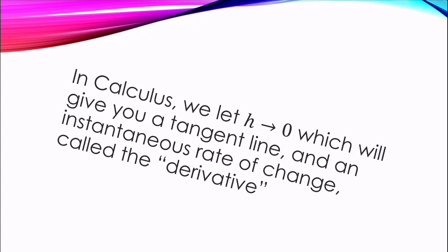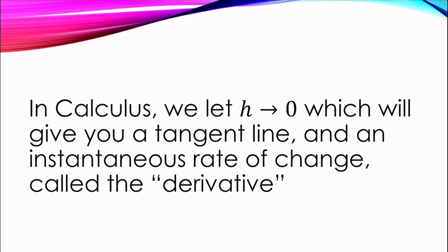So why is this formula relevant to us? In calculus, we let h go to zero, which will give you a tangent line and an instantaneous rate of change, called the derivative. When we say we let h go to zero, this is called taking a limit and will be the start of your calculus class. Now that we have a grasp on what the difference quotient is, let's go over how to calculate it.